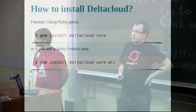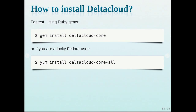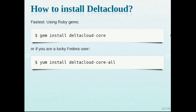How can you install Delta Cloud? It's very easy. If you're a Ruby user, just run 'gem install deltacloud-core' and it will install all dependencies. If you're a Fedora user, it's packaged so you just run 'yum install deltacloud-core'. If you're a Debian user, we welcome your contribution if you want to package Delta Cloud for Debian. There's also some packaging for macOS via Homebrew, so we're spreading around.